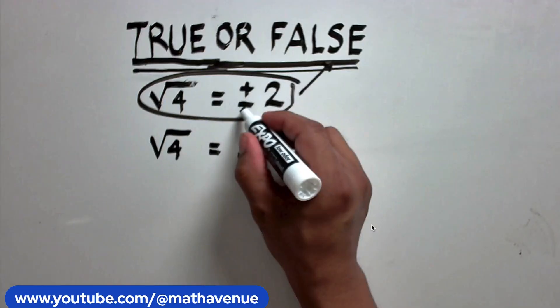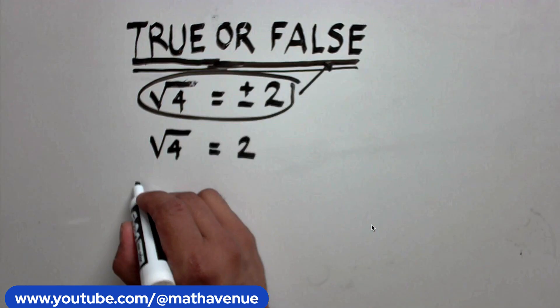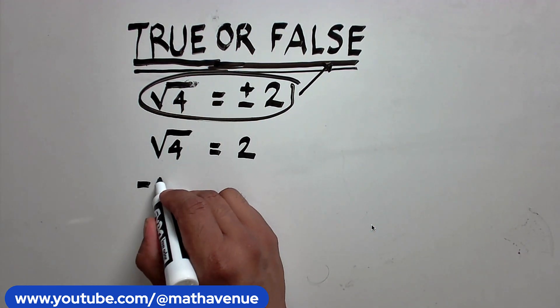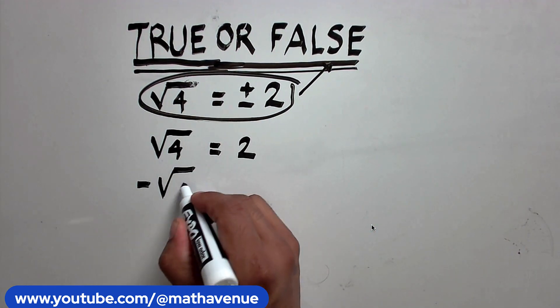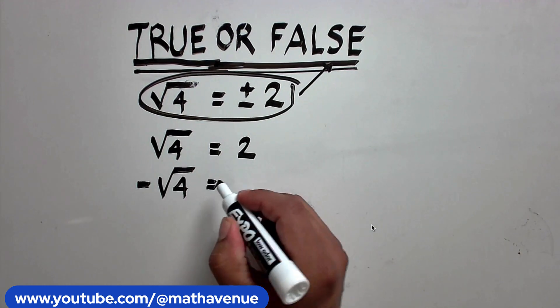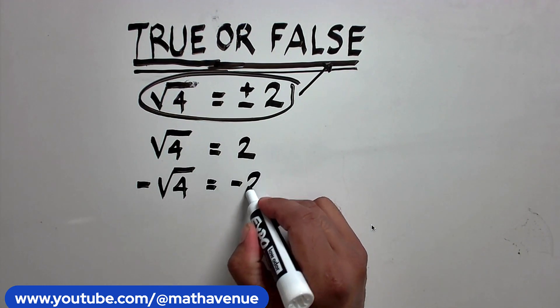Now, if we want negative 2, then we should have written it as minus the square root of 4. That is when this expression equals negative 2.